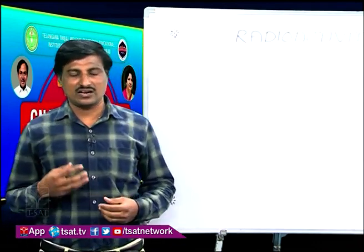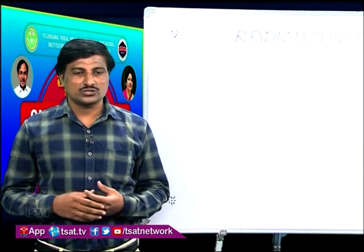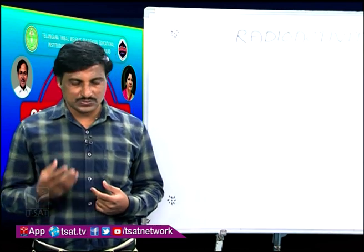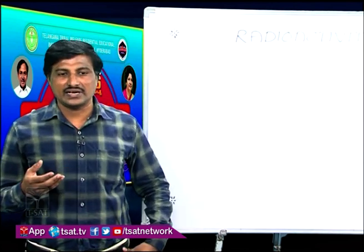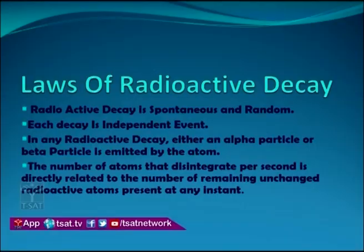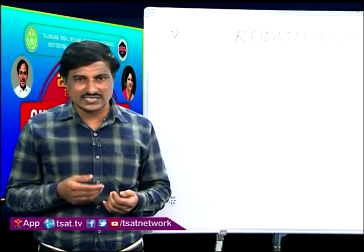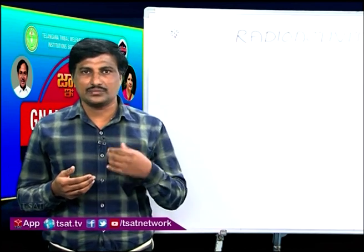There are some laws of radioactivity to be discussed. Radioactive decay is a spontaneous and random process. It is independent of external conditions like pressure, temperature, and electric field. Each decay is an independent event, occurring by chance. In any radioactive decay, either an alpha particle or a beta particle is emitted — simultaneous emission of both is impossible, but they may be emitted one after the other.